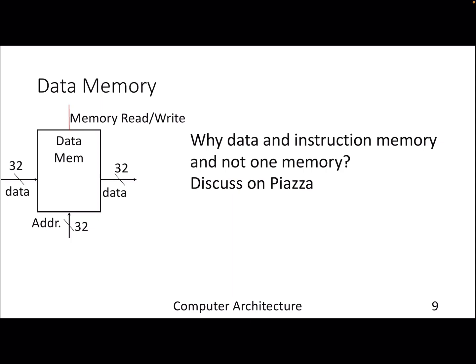Finally, there is the data memory, which is different from instruction memory because data memory supports both reading and writing. You provide an address, and depending on whether you want to read or write — determined by a control signal — either data is written to or read from memory. You might ask why there are two separate memories instead of one — think about that in the context of the stored program concept and the single cycle CPU.